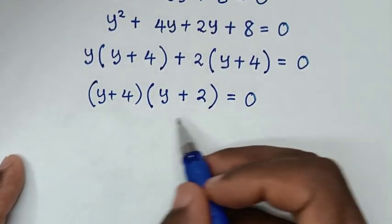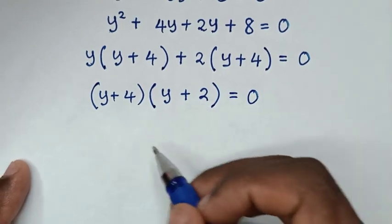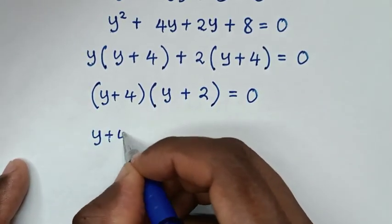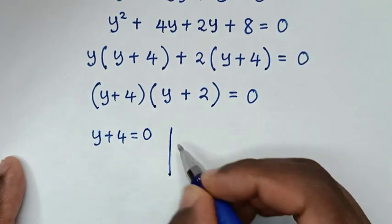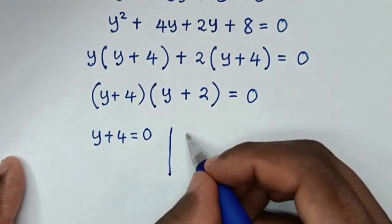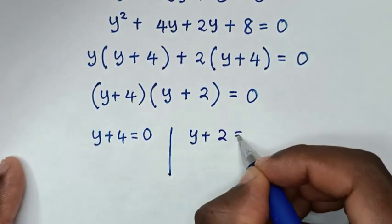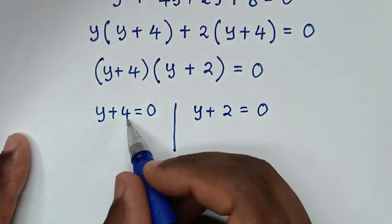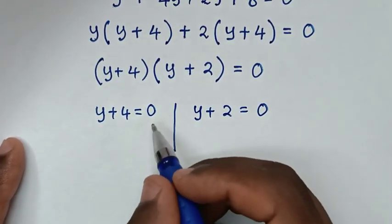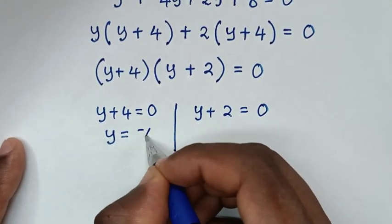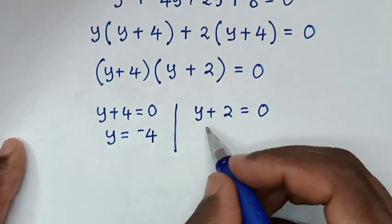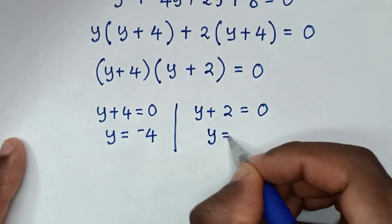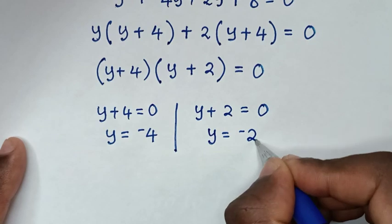We have two solutions. The first solution is y plus 4 equals 0, giving y equals negative 4. The second solution is y plus 2 equals 0, giving y equals negative 2.